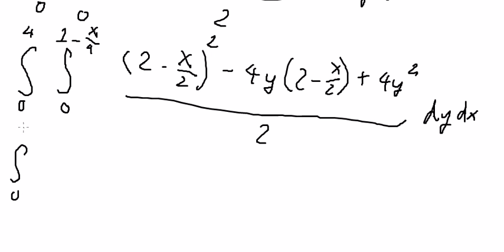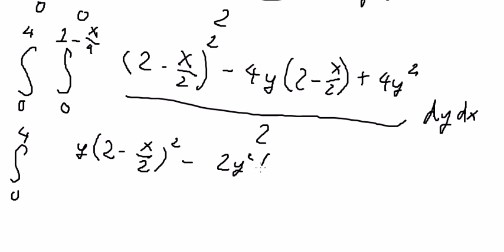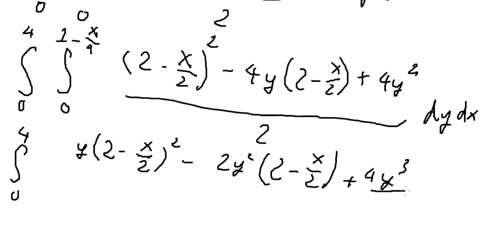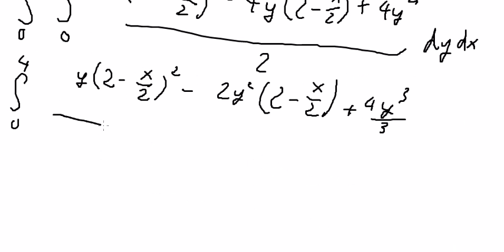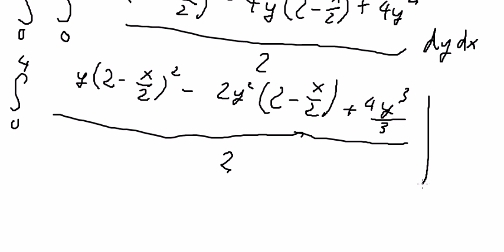Integrating with respect to y, we get: y, minus 2y squared, plus 4y cubed over 3, all divided by 2, evaluated at the boundaries.